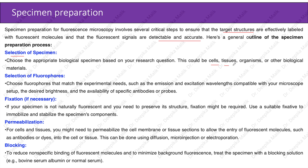Here is a general outline of the specimen preparation process. First, selection of specimen: choose the appropriate biological specimen based on your research question — this could be cells, tissues, organisms, or other biological materials. Second, selection of fluorophores: choose fluorophores whose emission and excitation wavelengths are compatible with your microscope setup, with the desired brightness and availability of specific antibodies or probes.